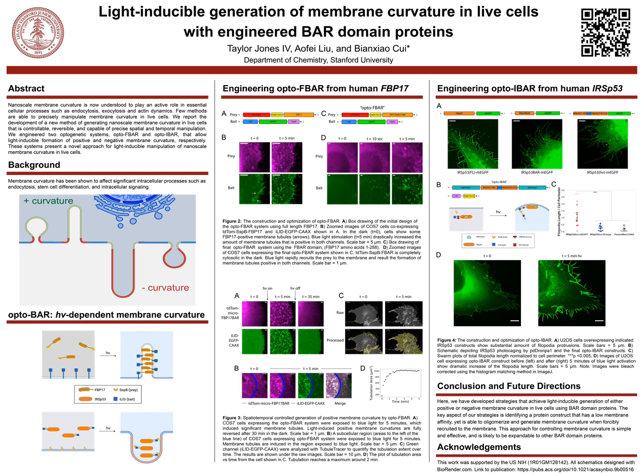Most studies of membrane curvature are done purely in vitro on supported bilayers or with vesicles. Methods to externally induce membrane curvature on cells are very low throughput, usually involving vertical nanostructures which are expensive and difficult to make in large quantities. This means most studies are limited to microscopy, and standard biochemical assays such as western blotting are not yet feasible.